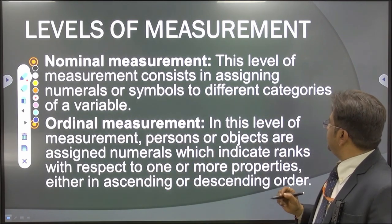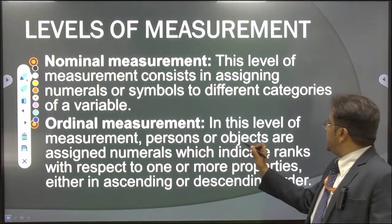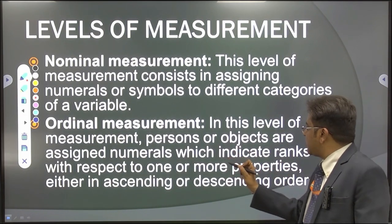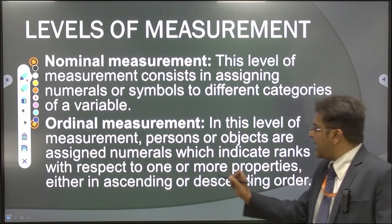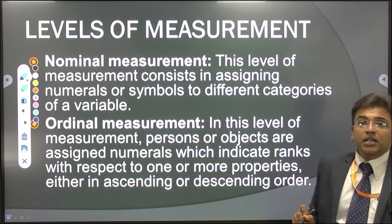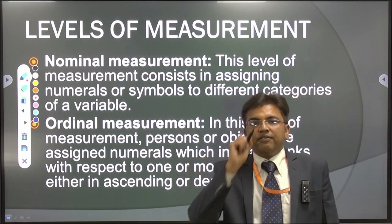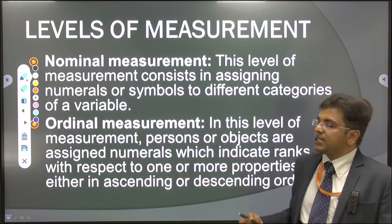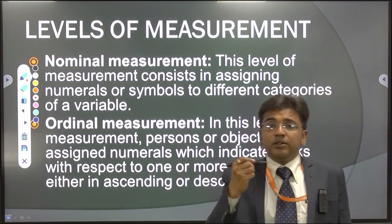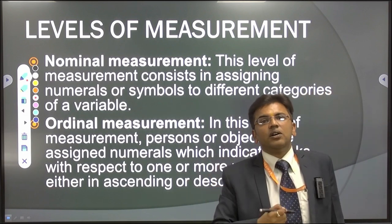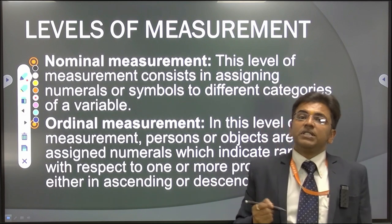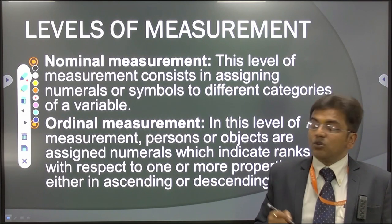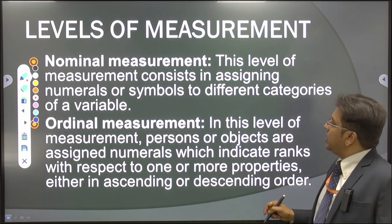The second is ordinal measurement. In this level, persons or objects are assigned numerals indicating rank with respect to one or more properties, either in ascending or descending order. While nominal scale assigns category names, in ordinal scale we rank things in ascending or descending order.